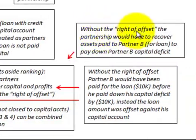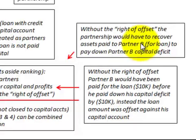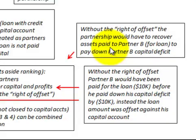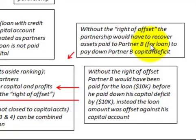So without the right of offset, the partnership would have had to recover assets paid to partner B for this loan, because it would have been paid first, before partner B's capital deficit was paid down. They would have received the loan amount before their capital deficit was settled.